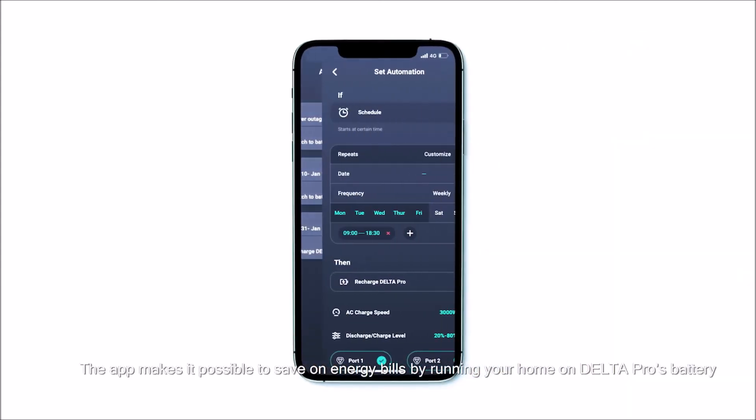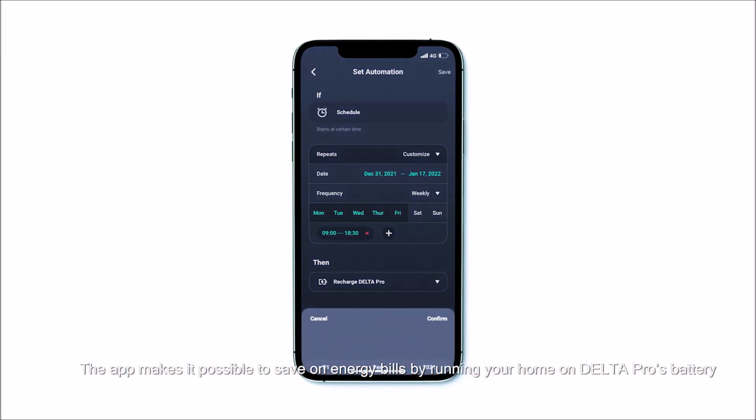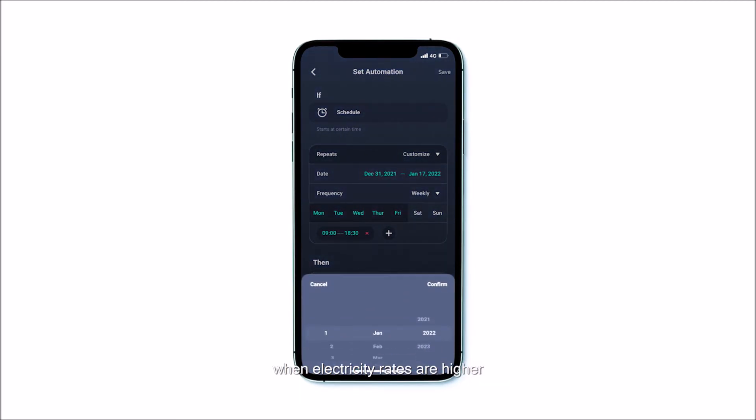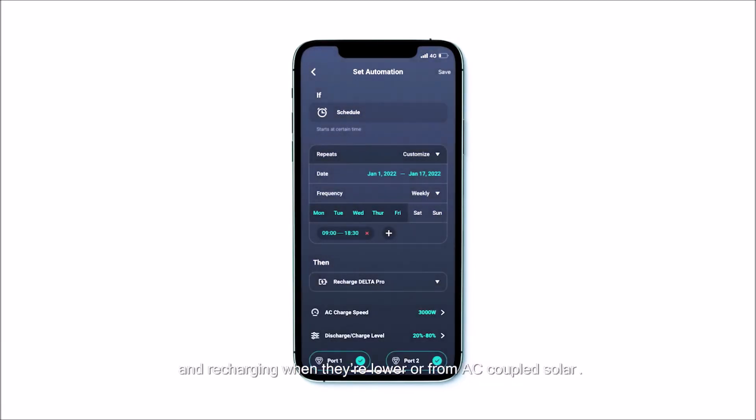The app makes it possible to save on energy bills by running your home on Delta Pro's battery when electricity rates are higher and recharging when they're lower or from AC coupled solar.